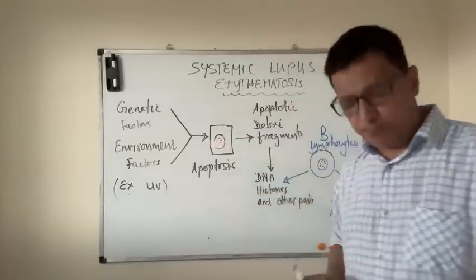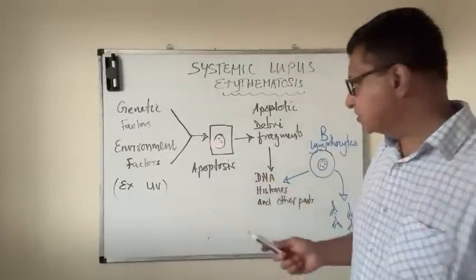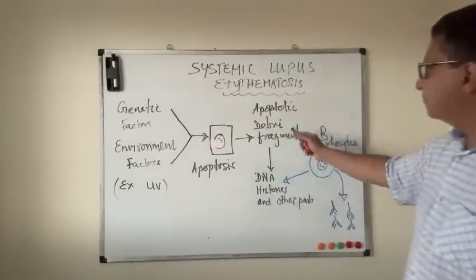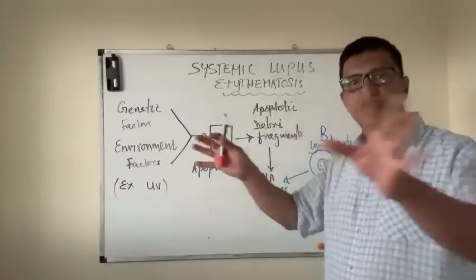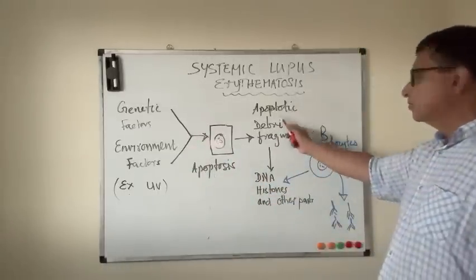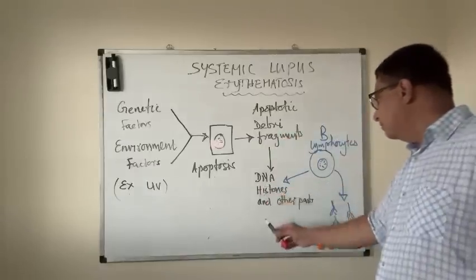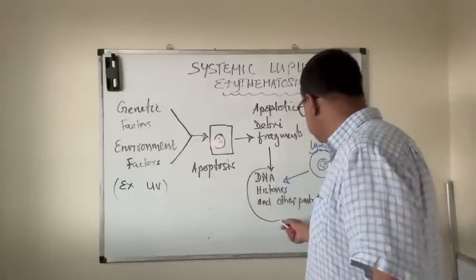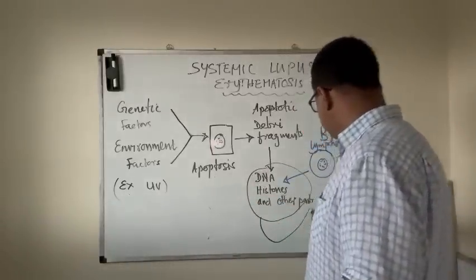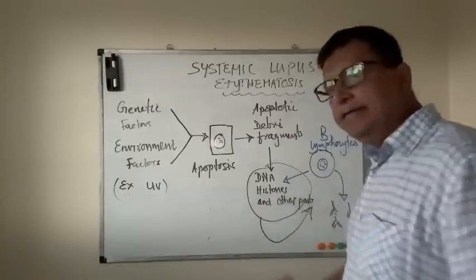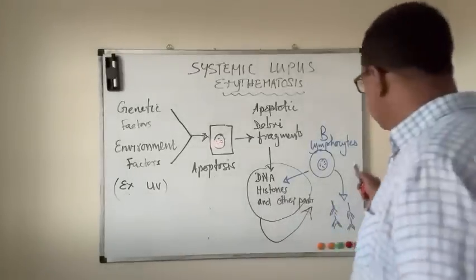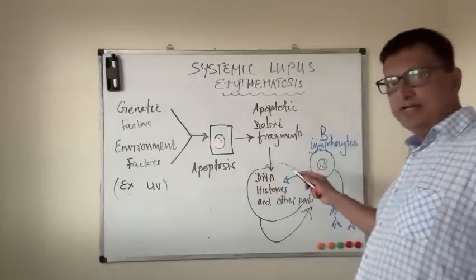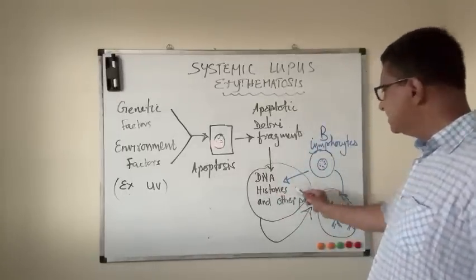...the cells go into apoptosis due to oxidative stress. Apoptosis is the programmed cell death. As a result of this programmed cell death, apoptotic debris fragments — including DNA, histones, and various other particles — are released into the system. These particles are presented by antigen-presenting cells, which thereby stimulate T lymphocytes and in turn stimulate B lymphocytes to produce antibodies against this debris tissue.